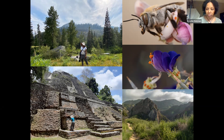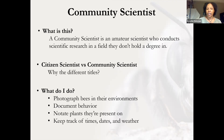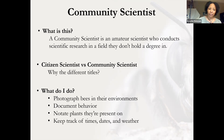Here's a picture of me in the Trinity Alps, which I went to in 2021 to find an endangered bee. I also went to Belize last year to photograph a nighttime bee. I'm called a community scientist — a lot of people say 'citizen scientist,' but 'community' is considered more inclusive. A community scientist is an amateur scientist who conducts scientific research in a field they don't hold a degree in. What I do is document bees and their environment, note their behavior and the plants they're on, and keep track of times, dates, and weather using an Excel spreadsheet I update every year.